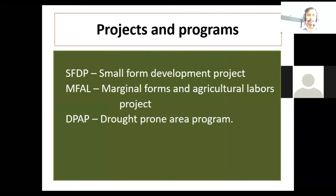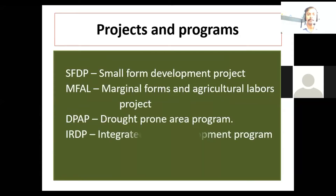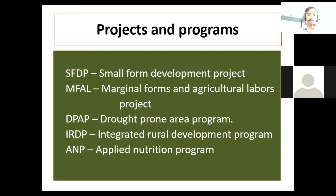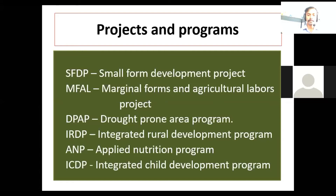DPAP — Drought-Prone Area Program. IRDP — Integrated Rural Development Program. ANP — Applied Nutrition Program. Then ICDP — Integrated Child Development Program.